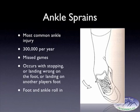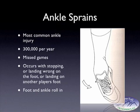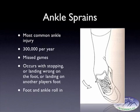Ankle sprains are the most common ankle injuries that occur in sporting activities. It is estimated that there are over 300,000 of these that occur per year. It usually occurs with a stopping injury — a person will be running down the field or court and will try to stop.